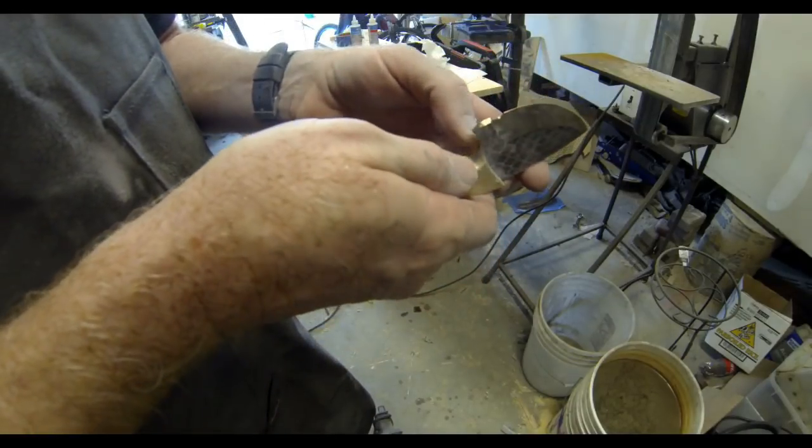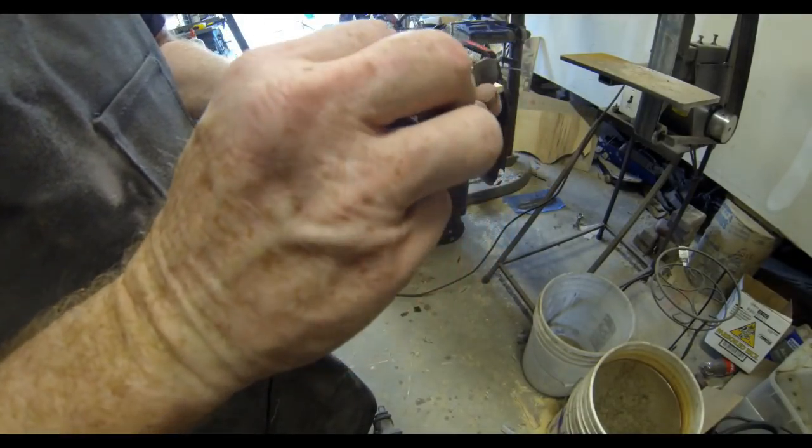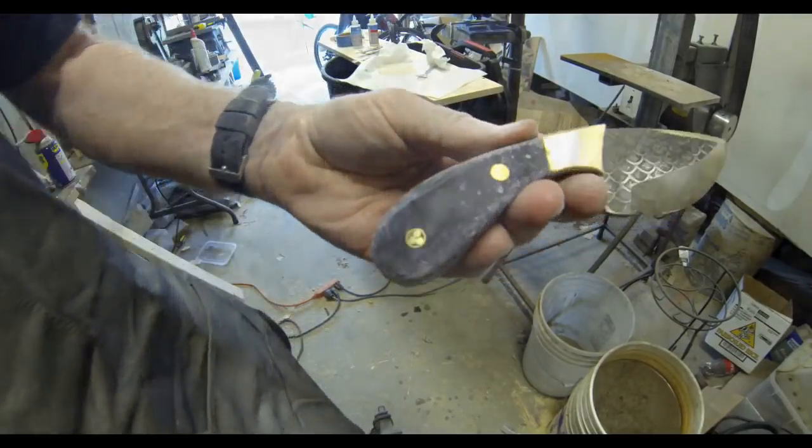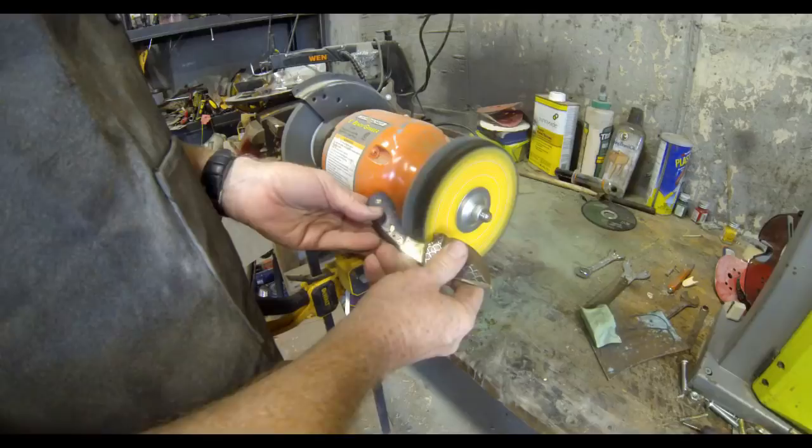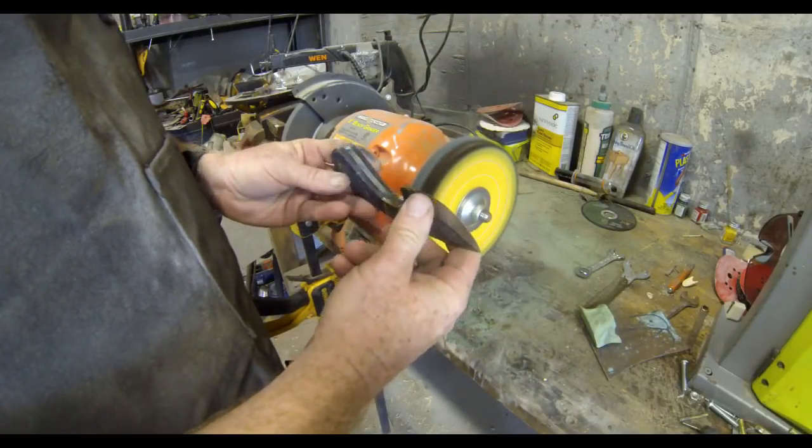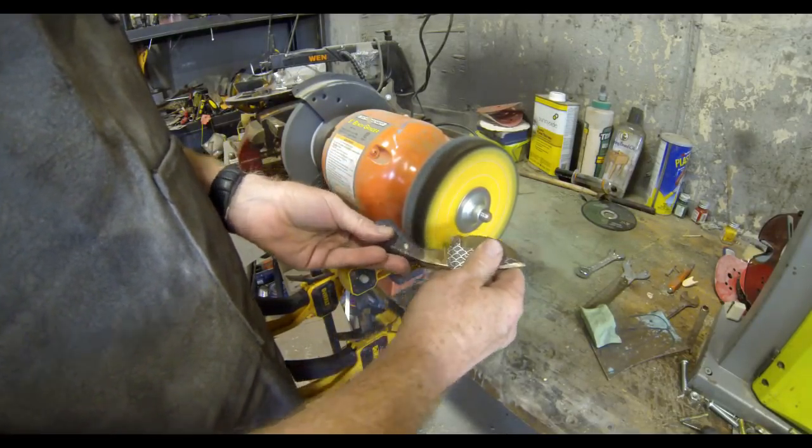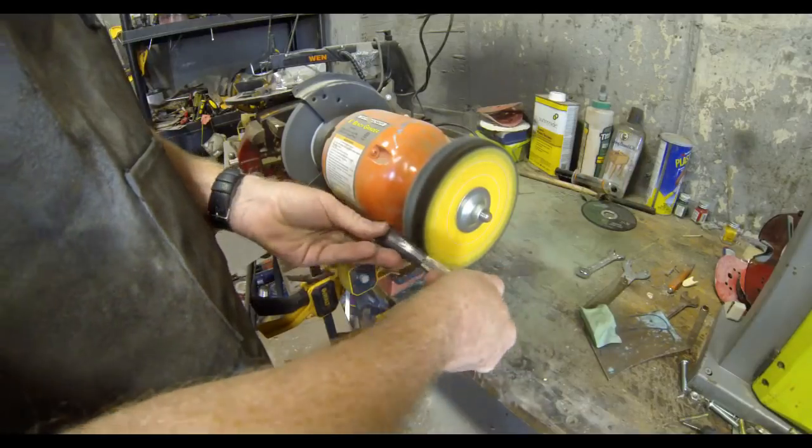Now aside from sharpening, final sharpening, and of course making a sheath, this knife is basically done except for polishing. So I just went over to a polishing wheel and polished up the bolsters as well as that sponge micarta.